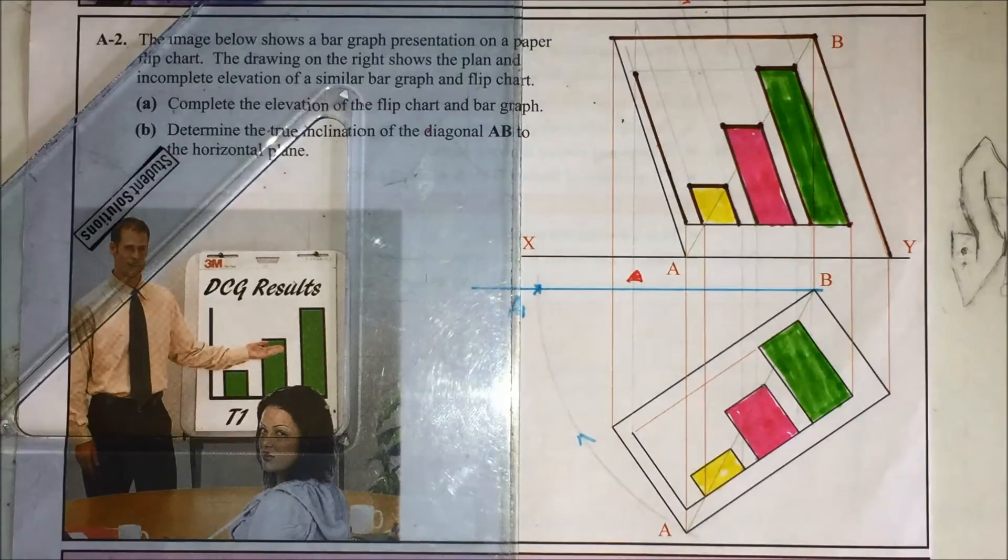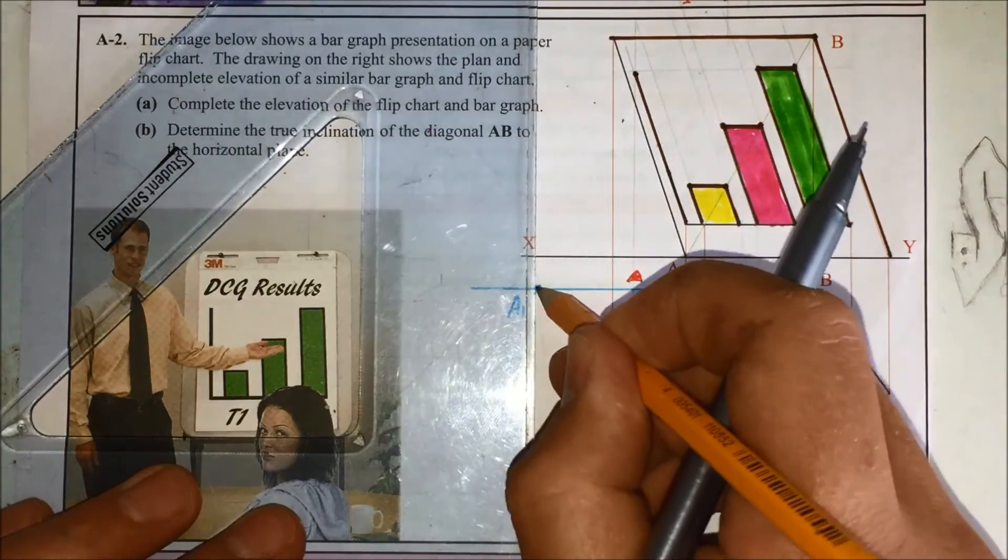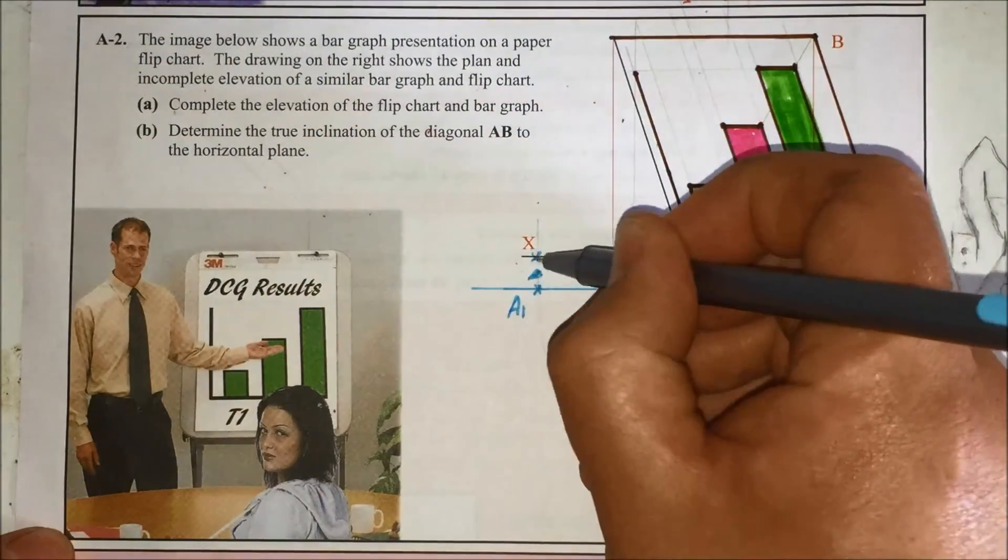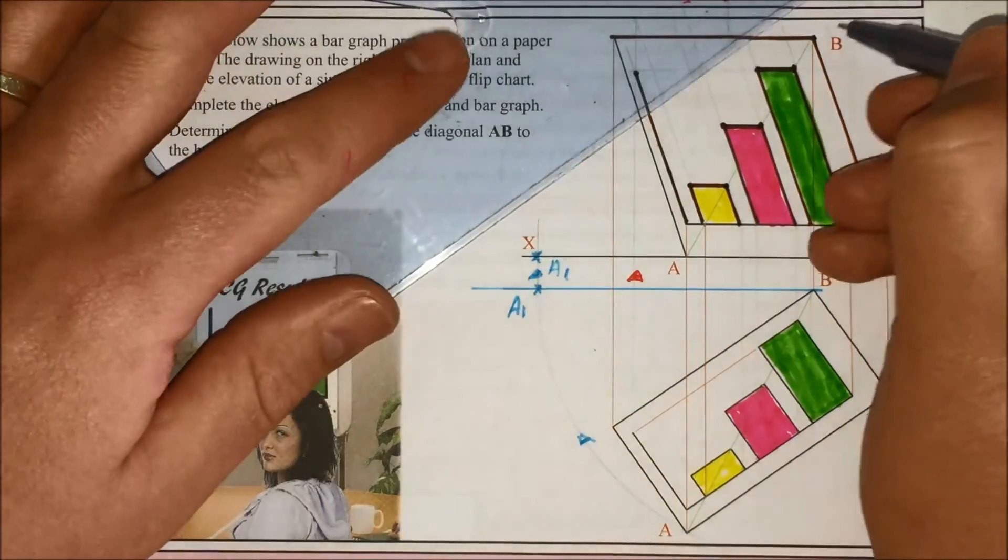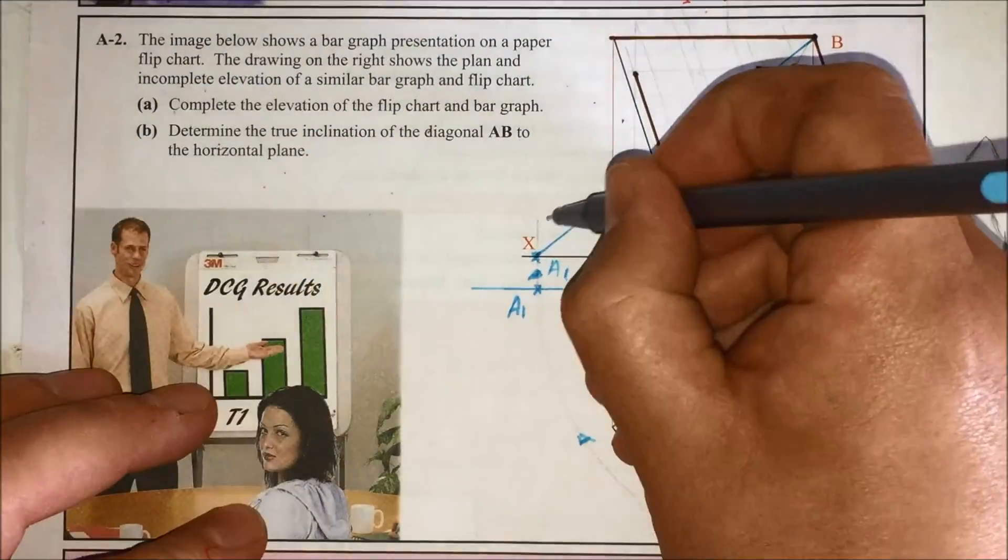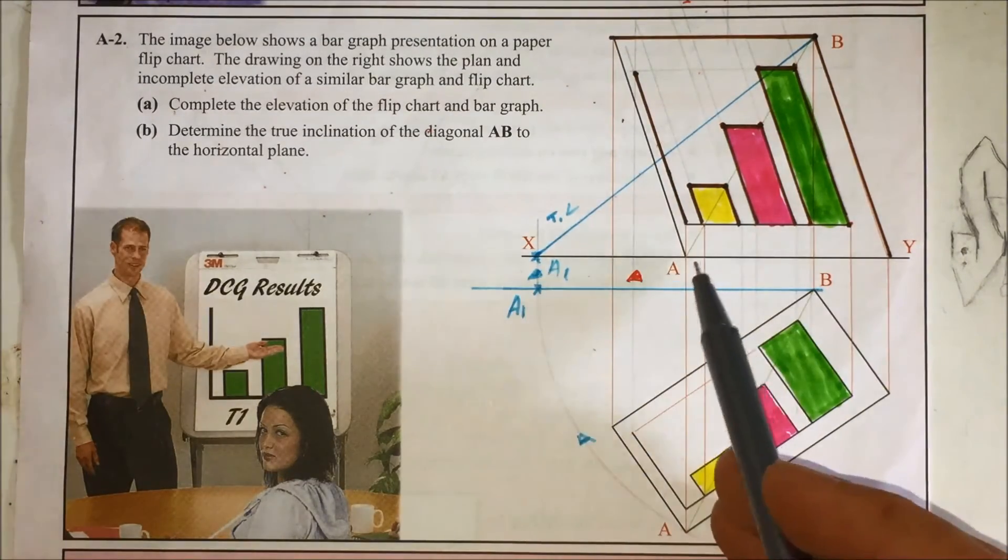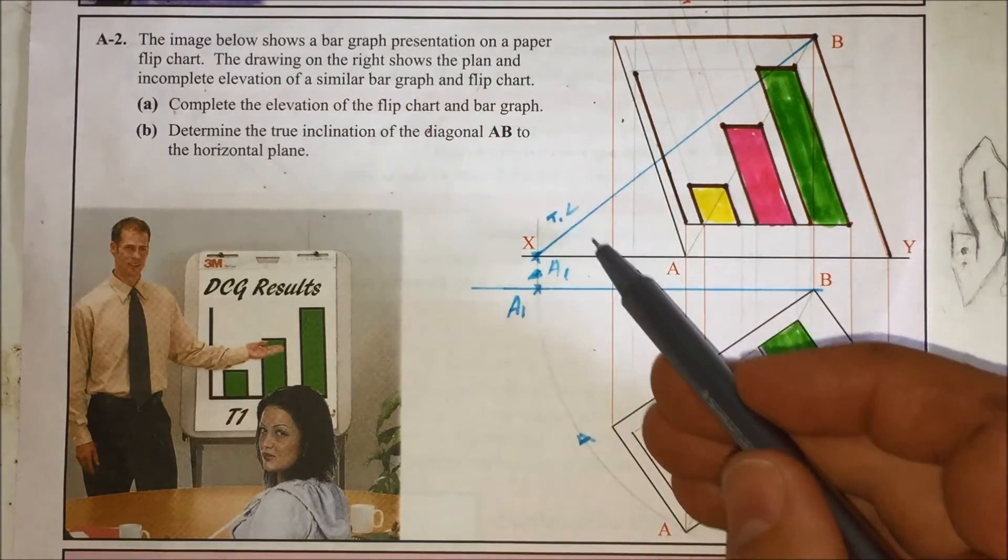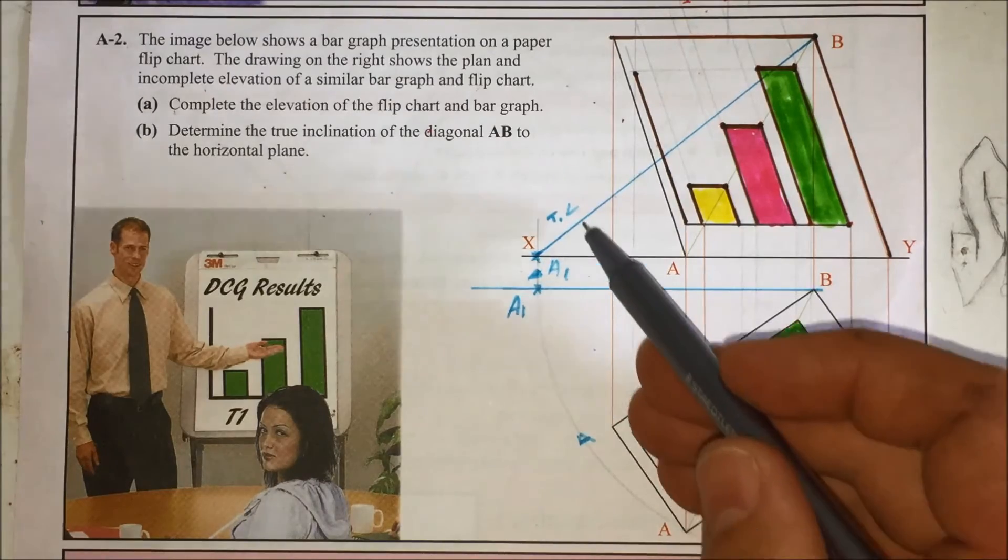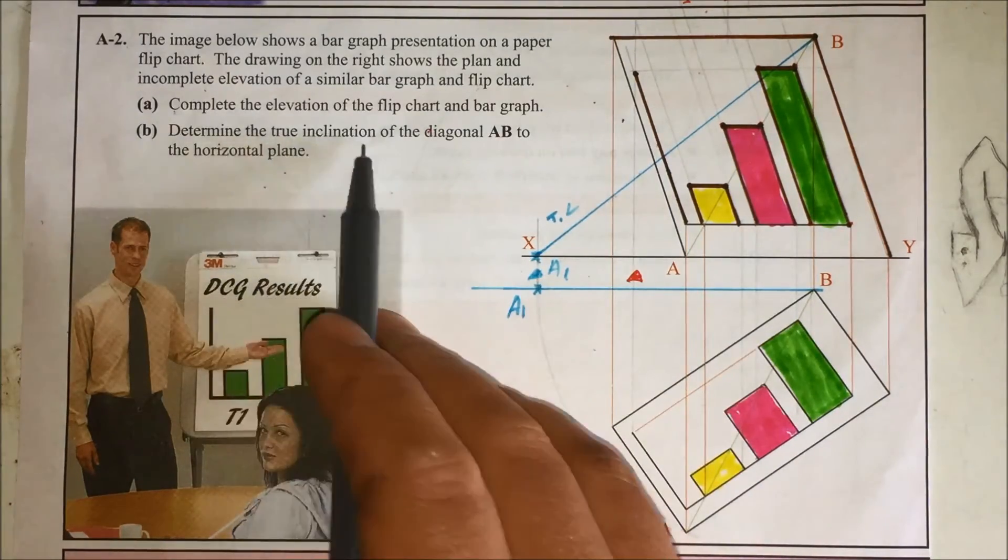So therefore it's a true length in elevation. So we bring A1 up to the elevation, join that back to B. That's all giving you a true length of the AB line. Notice A1 is still on the horizontal plane like A. So now we can measure this angle that our true length makes to the horizontal plane to figure out the true inclination.